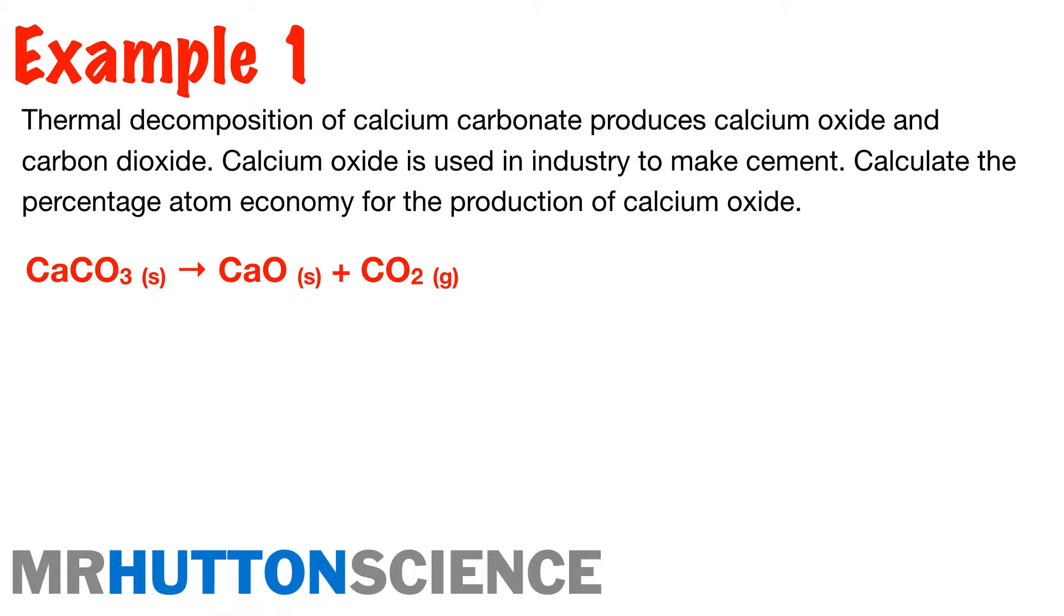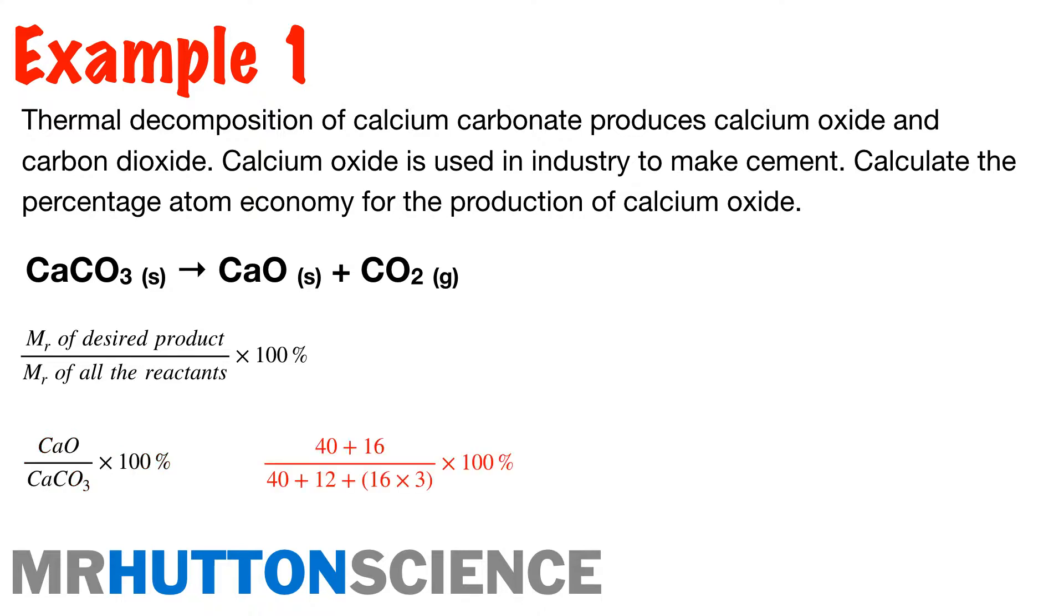Right, so our desired product here is the calcium oxide. And then our reactant is our calcium carbonate. So if we look at our equation we're going to use, the MR of desired product, which is our calcium oxide, over the MR of the reactants, which is the calcium carbonate. So quite simply, we just put the MRs into our equation,